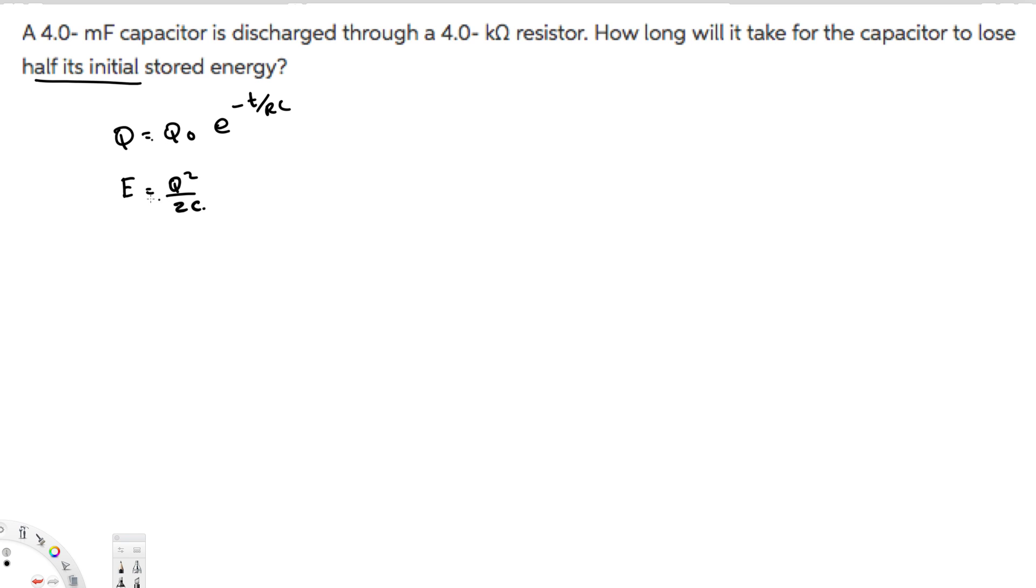If you notice, energy is directly proportional to Q squared. So if the stored energy drops by half, Q squared also drops by half. Therefore, Q is going to drop by square root of 0.5, because if Q squared is 0.5, then Q equals square root of 0.5.